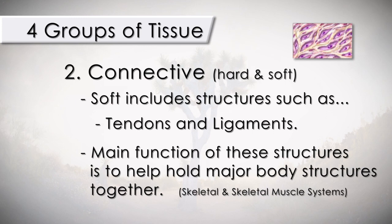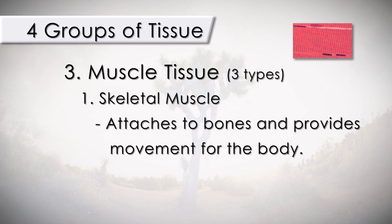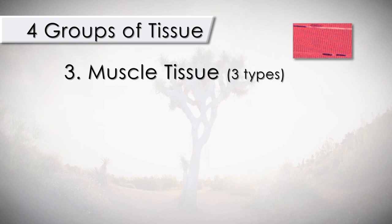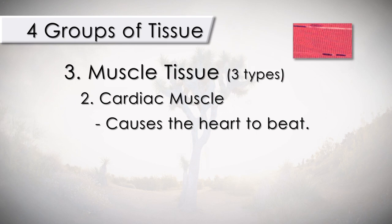The third main group of tissues are the muscles. There are three main types of muscles. First, the skeletal muscles, which attach to the bones and provide movement for the body. Second, cardiac muscles, which cause the heart to beat. And third, the visceral or smooth muscles, which are present in the walls of many organs such as the esophagus, stomach, intestine, fallopian tubes, and blood vessels.